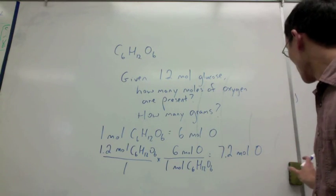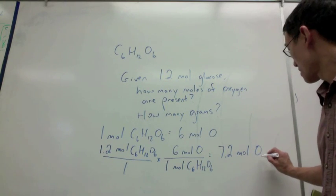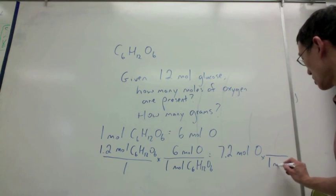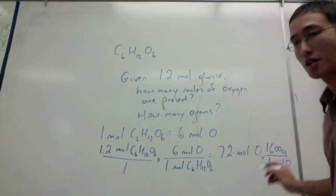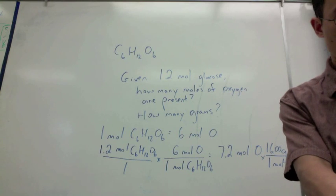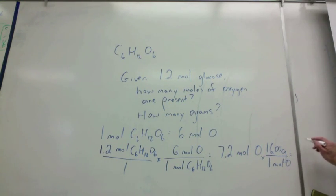And if I want to take it a step further and get grams out of that, I can take molar mass of oxygen. So, for one mole of oxygen, 16.00 grams. And I get that from the periodic table. If I multiply that out, it's 115.2 grams of oxygen.